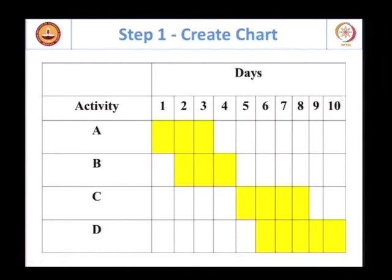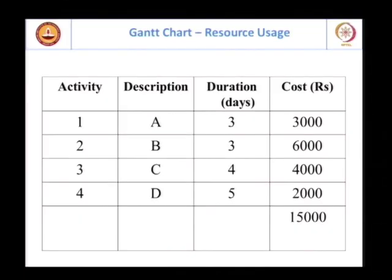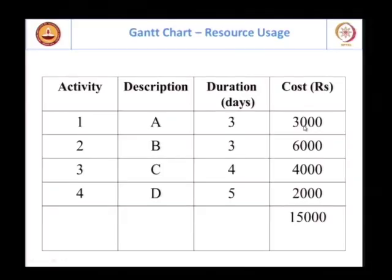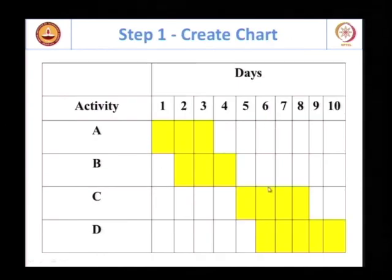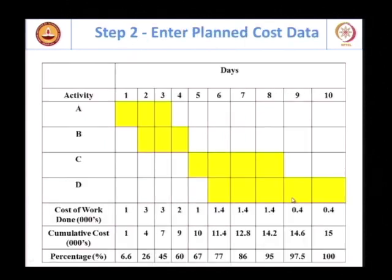A cost curve can be plotted. How would I go about plotting a cost curve? Here is some of the data. I have to assume that my cost per day will be uniform. If I assume that, it will be 3000 divided by 3, so it will be 1000 per day here, 2000 per day here, 1000 per day here, and it will be a fraction in the other one, and we will now distribute it.